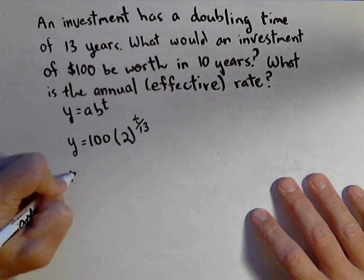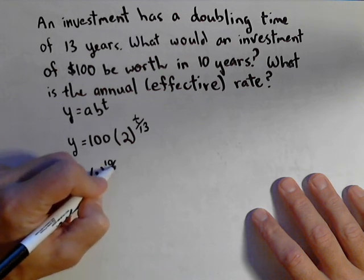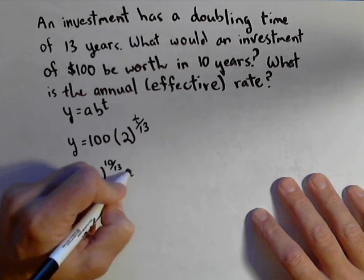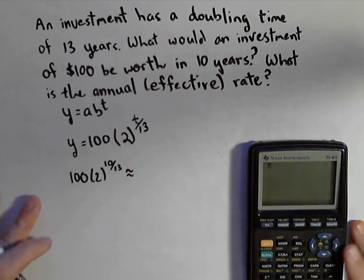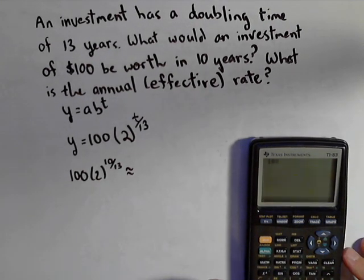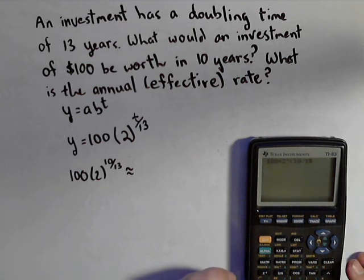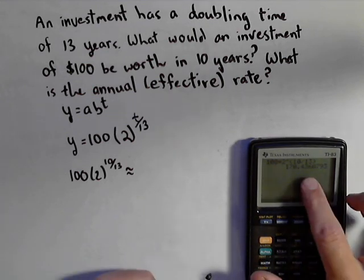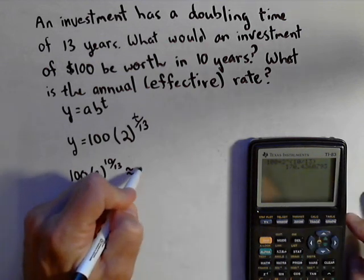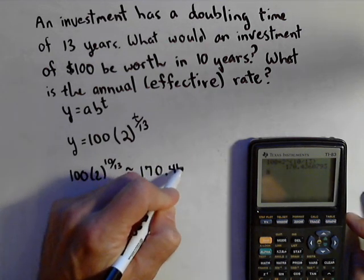So to do 10 years, I got 100 times two to the 10 over 13, which is about, so I just wanna do this because it's important that we put it into our calculator, times two raised to the, now you gotta make sure you put the exponent in parentheses. 10 divided by 13. And enter. And we can round to two decimal places because we're dealing with money. So it's worth $170.44, roughly.